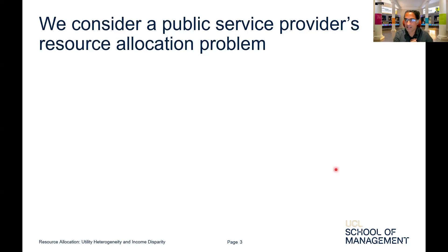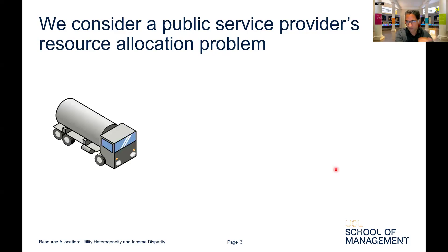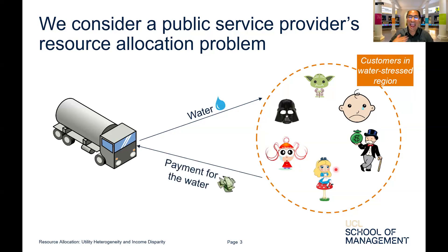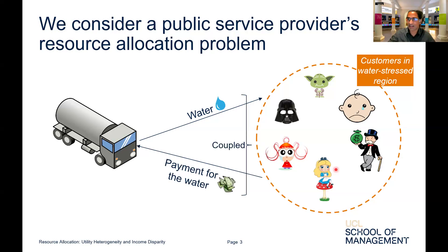We consider a public service provider's resource allocation problem — for example, a water tanker serving heterogeneous customers in a water-stressed region. What we seek to understand is how to allocate both the water and the payment for this water, and these two problems are coupled.